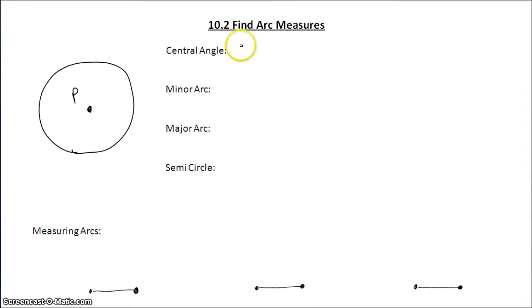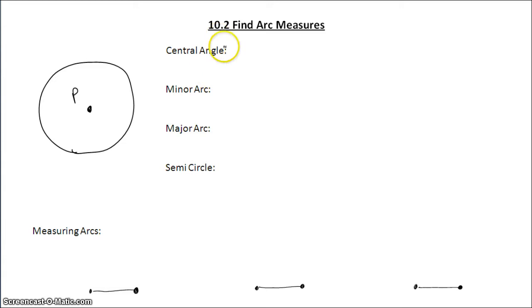Before we get started in today's lesson, we need to go over four vocabulary words. The first vocabulary word is central angle. A central angle is an angle formed by two radii.